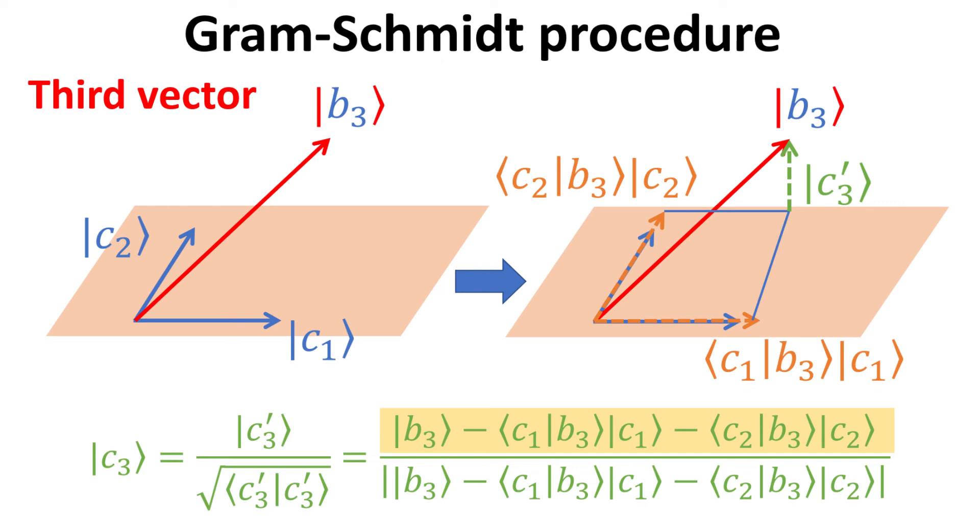Since the vectors B_j are linearly independent, this implies that the vector B3 does not lie on this orange plane, where the vectors B1 and B2 span. Hence, the vector B3 must contain a component that is orthogonal to this orange plane. Similar to the previous case, the basic idea is to extract out this component that is orthogonal to C1 and C2, and let that be our C3.